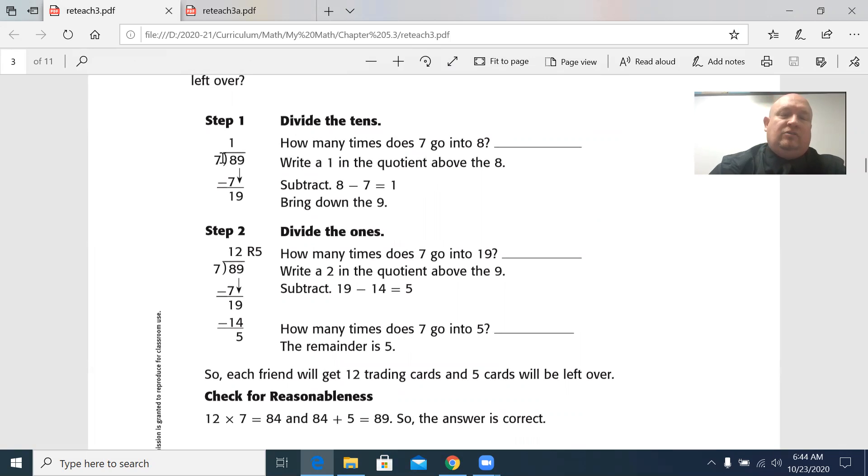Well, there's only two of them here. So we have tens and ones. So that's what they mean. It'll be the eight in this case. How many times does seven go into eight? It goes in one time. Because if I count, it goes seven, 14, and I can't go over.